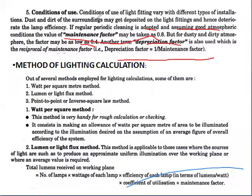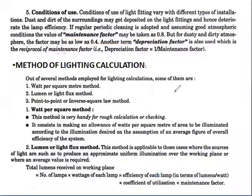Methods of lighting calculation: out of several methods employed for lighting calculation, some of them are: the watt per square metre method, the lumen or light flux method, and the point-to-point or inverse square law method.